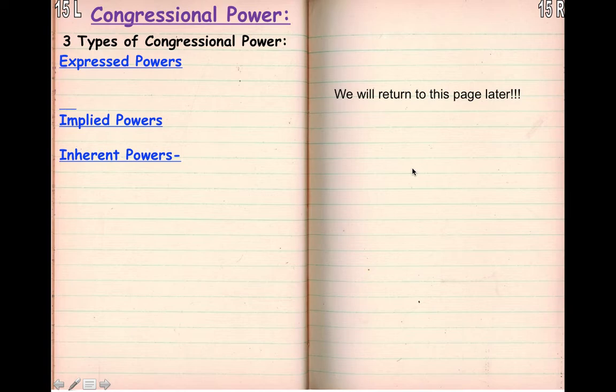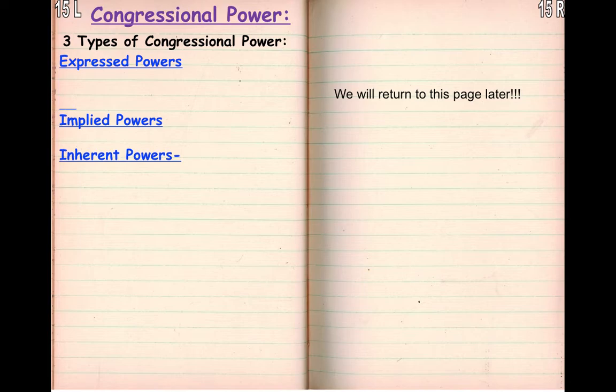Okay, so now we're going to get into congressional powers. We have the three types of congressional power. By the way, this should be day two — A day would be 3-20, March 20th, and B day would be 3-23, March 23rd. We're going to go through 15L through 17R. I know it sounds like a lot, but 16 and 17 are really simple. I'm not going to explain a whole lot because they're pretty self-explanatory.